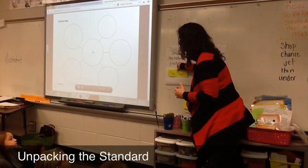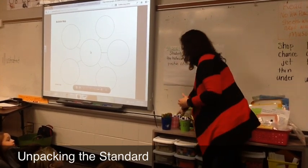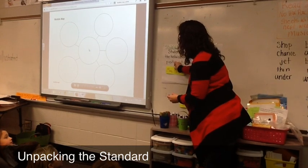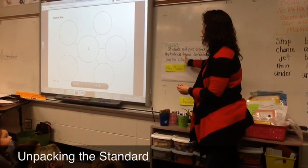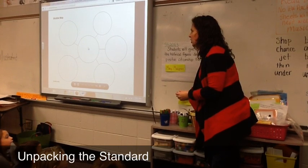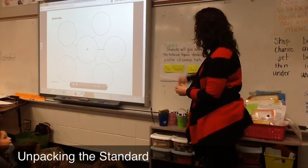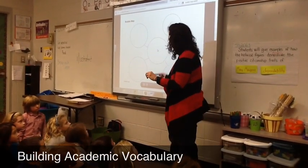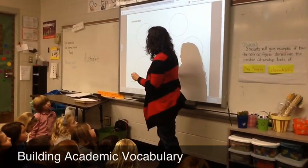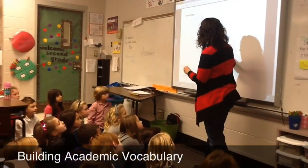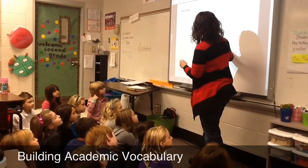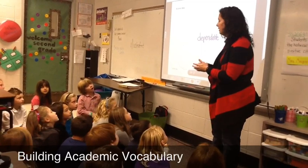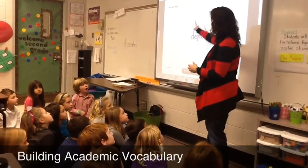So we're going to put Mary Musgrove up here. She is our historical figure, and she showed dependability. Your job during our lesson today is to look for ways that Mary Musgrove was dependable. We're going to look in our text in just a second to pull evidence from the text to show how she was dependable.